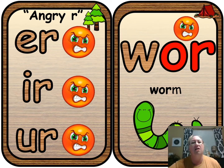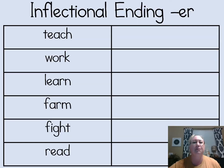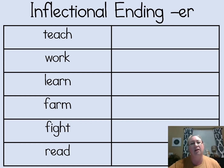ER is often seen at the end of words. The ER ending can be added to some words to make new words. If we add ER to the end of verbs — action words — it changes the verb to a noun. I want you to split your paper into two sections or columns and copy down the words you see in the boxes. Press pause on the video while you do this, and when you're ready you can push play and we will continue.